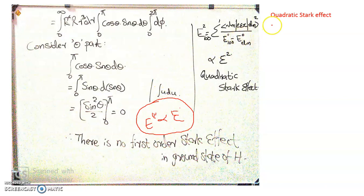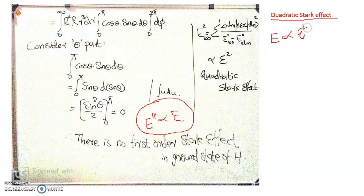However, there is one more Stark effect, referred to as the quadratic Stark effect, where the correction in energy — which could be the second-order or higher-order correction — is proportional to the square of the magnitude of the applied electric field. Such a Stark effect is referred to as the quadratic Stark effect.